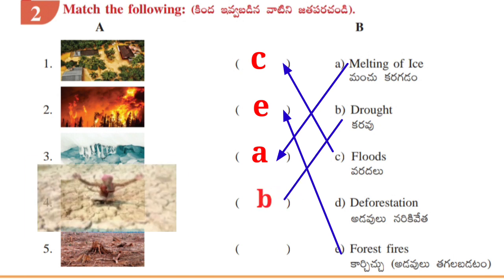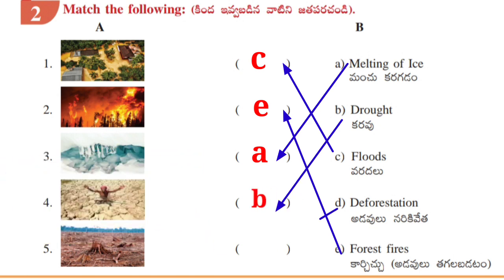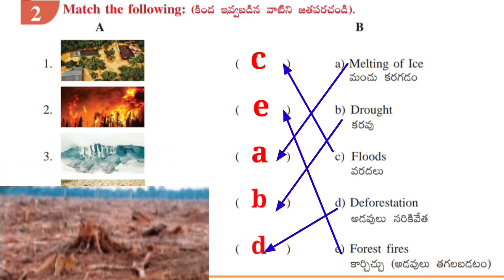Fourth picture: B. Drought (Karuvu). Fifth picture: D. Deforestation (Adavulu Narakiveta).